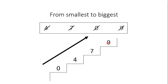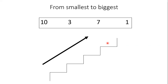See another example. Here, as usual, we have four numbers: 10, 3, 7, and 1. So which number is the smallest? Yes, 1 is the smallest.